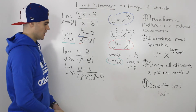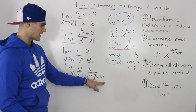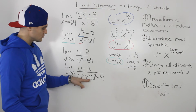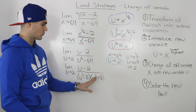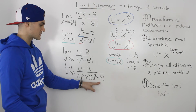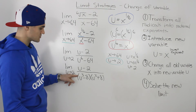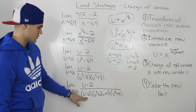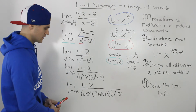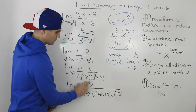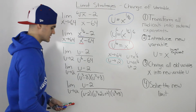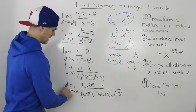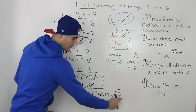Now we have two brackets in the denominator. Substituting u equals 2 into the second bracket gives 16 — not zero, so we leave it. The first bracket, u to the power of 3 minus 8, gives 0 when u equals 2, so we need to factor it further. It's a difference of cubes: u to the power of 3 minus 8 factors into (u minus 2)(u squared plus 2u plus 4). The u minus 2's cancel out, leaving the limit as u approaches 2 of 1 over (u squared plus 2u plus 4)(u to the power of 3 plus 8).